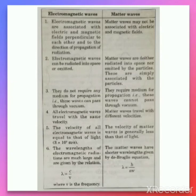Note down these differences in your notebook. From this it is clear what matter waves are and what electromagnetic waves are — electromagnetic waves as discussed in electromagnetic radiation, and matter waves as discussed in the de Broglie relationship. Note it down in the same way as given in this picture. Thank you everyone.